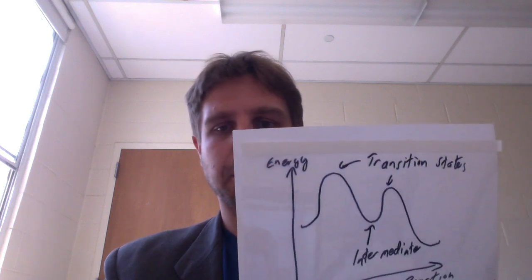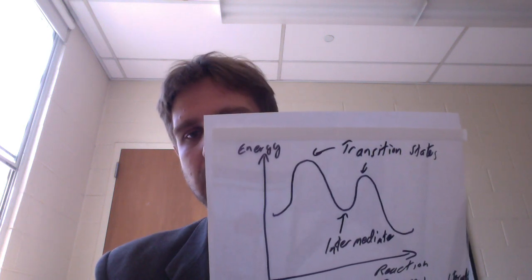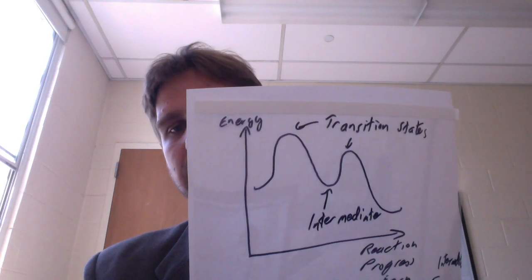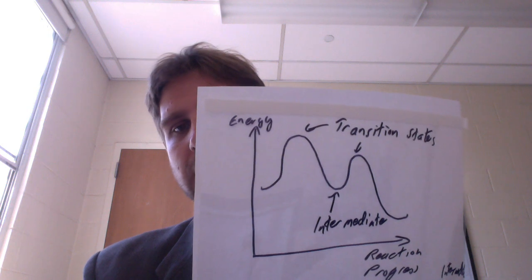But not all reactions progress through an intermediate. The difference between an intermediate and a transition state is that an intermediate is some sort of compound situated between two transition states — a local energy minimum. It's a relatively low energy point between two high energy points, but it may not be the lowest energy point overall.